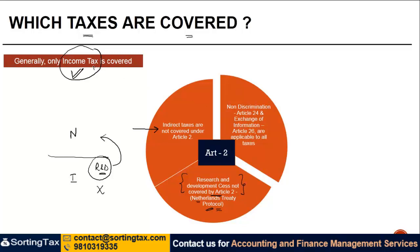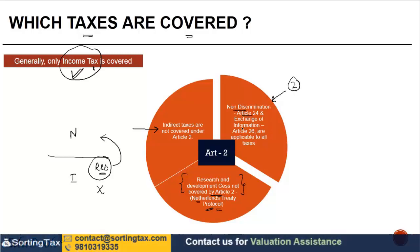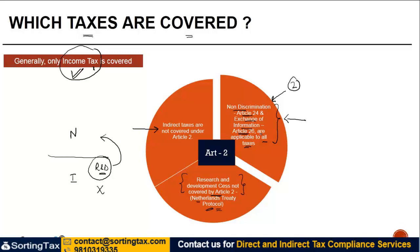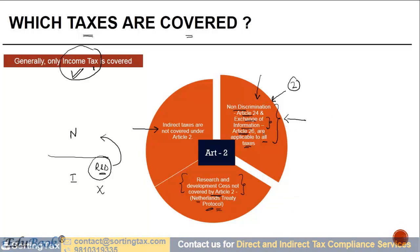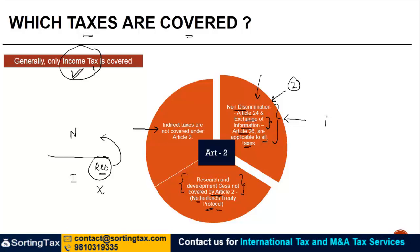However, the definition of tax in Article 2 generally does not apply to the non-discrimination clause — Article 24 — and the exchange of information clause — Article 26 — which are generally applicable to all taxes. That said, it is not a rule of thumb that Articles 24 and 26 will cover all forms of taxes. Normally, Article 24 contains a specific mention that it shall apply to all types of taxes. Similarly, for exchange of information, there is a specific mention that the provisions of Articles 1 and 2 shall not restrict the exchange of information, meaning Article 2's limited scope does not limit the application of Article 26.